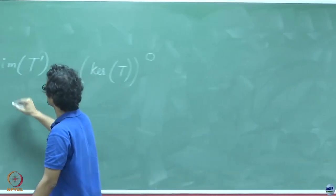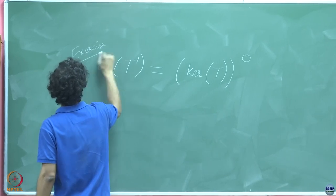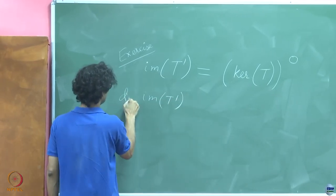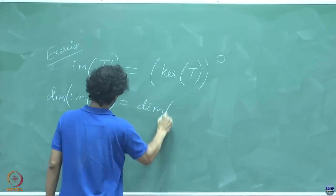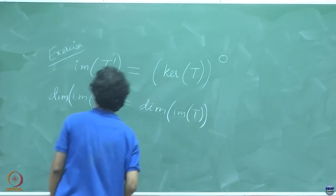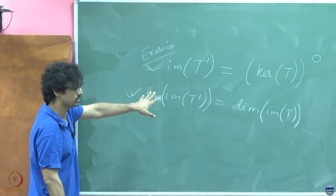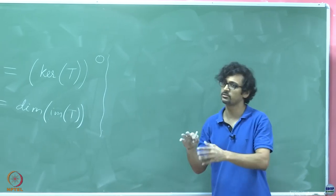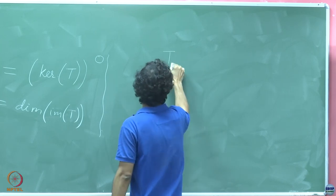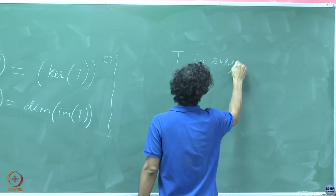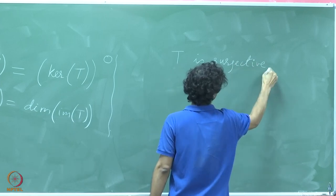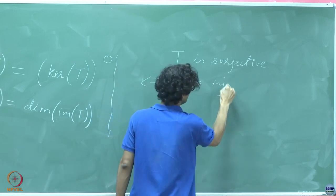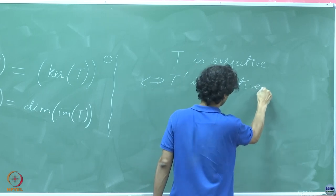Come to think of matrices again it is very obvious — it is a special case. But in general, why is this going to be true? So we have this result; maybe I will leave this to you as an exercise. And also the dimension: you will be able to show that the dimension of the image of T prime is going to be the same as the dimension of the image of T.